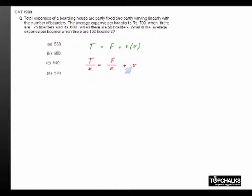Whenever there are different sets of people staying in the boarding house, the difference in the average expense would only come because of the fact that f by n is changing.